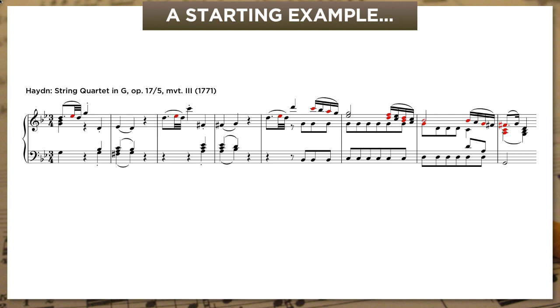This is the slow movement from Haydn's 5th opus 17 string quartet. And when we listen, I want you to simply follow the bass line to see if this scale-degree pattern looks familiar. Ask yourself, what does this bass line seem to be telling me about the harmonies or harmonic functions that are in play here?